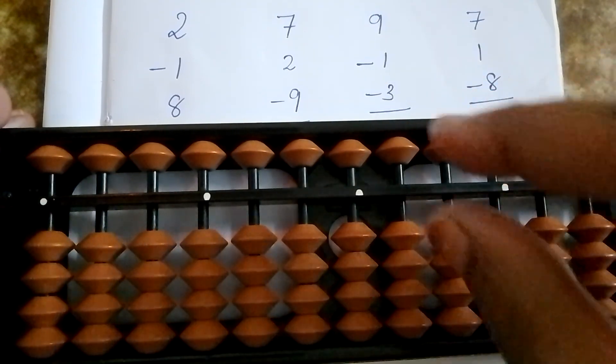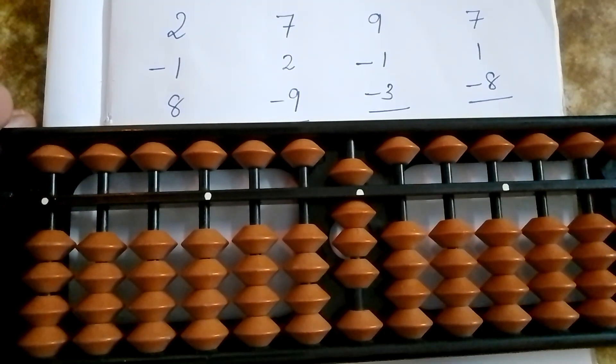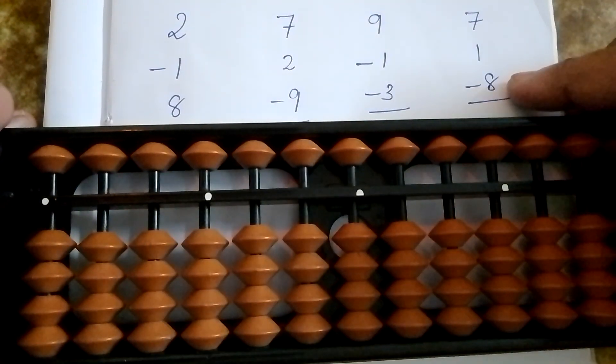Next question 7. Add 7. 1. Add 1. Less 8. Remove 8 bits. What is the answer? 0.